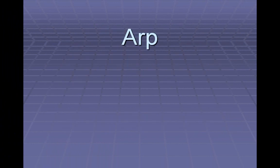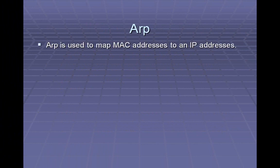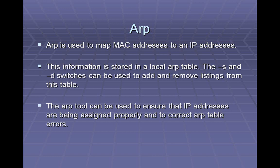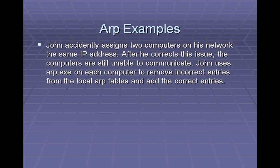The next tool we're going to look at is ARP. ARP is a very cool tool. It's basically a tool that maps the MAC addresses to the IP addresses. That's how your computer can tell what IP address is associated with what actual physical computer. It stores that in a table which you can edit with -s and -d, which stands for store and delete. This is a good way to ensure that all of your IP addresses are assigned properly. In this example, John has accidentally assigned two computers on his network the same IP address. He corrects it, but then the local ARP cache is still messed up. So he loads up ARP so he can see the problem and then manually correct it.